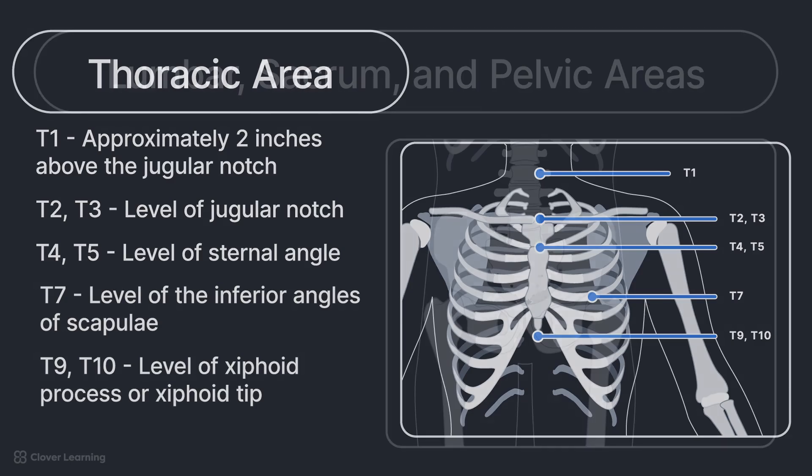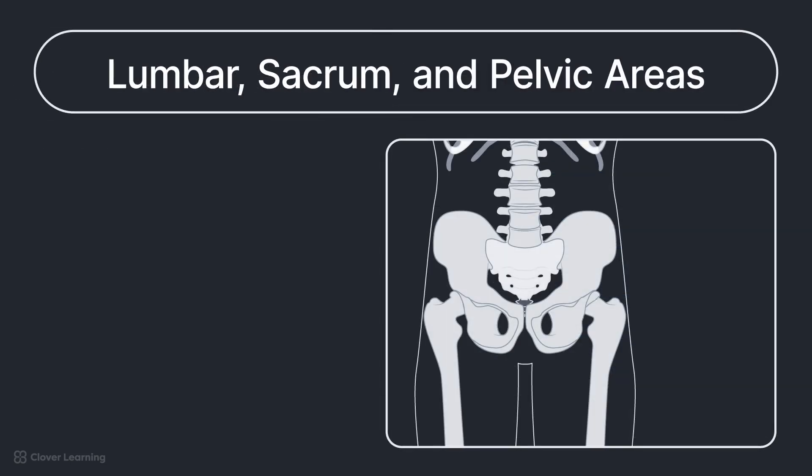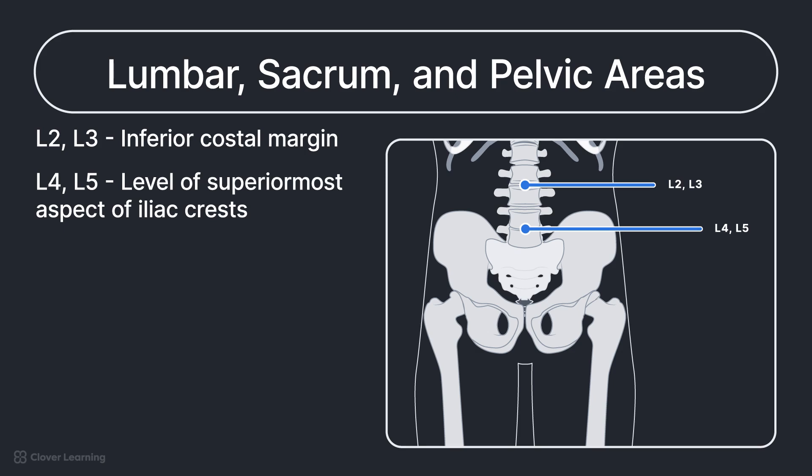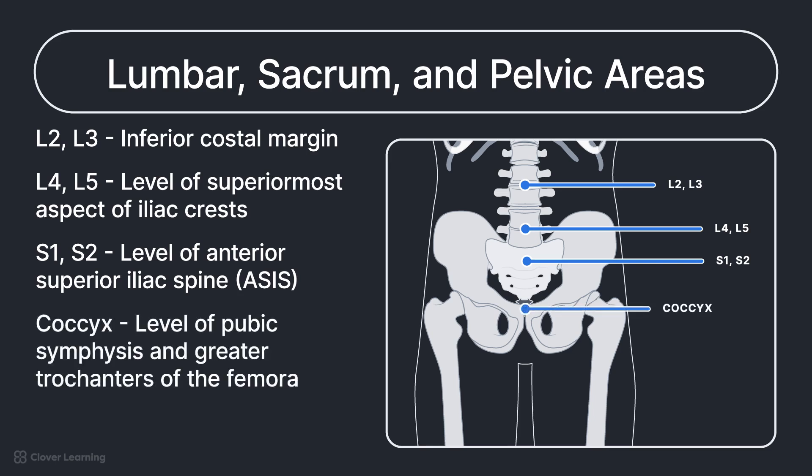Body structures and corresponding external landmarks for the lumbar, sacrum, and pelvic areas include L2 and L3, inferior costal margin. L4 and L5, level of superior most aspect of iliac crests. S1 and S2, level of anterior superior iliac spine, or ASIS. And coccyx, level of pubic symphysis and greater trochanters of the femora.